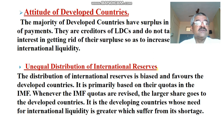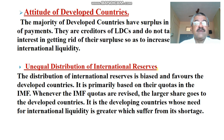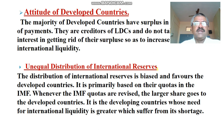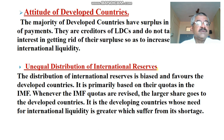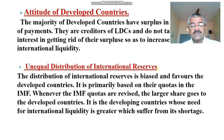Unequal distribution of international reserves is another problem. The distribution of international reserves is biased and favors developed countries. It is primarily based on their quotas in the IMF, where whenever IMF quotas are revised, the larger share goes to developed countries. Their strength in institutions like the IMF and World Bank is very high. It is the developing countries whose need for international liquidity is greater, yet they are the ones who suffer from its shortage.